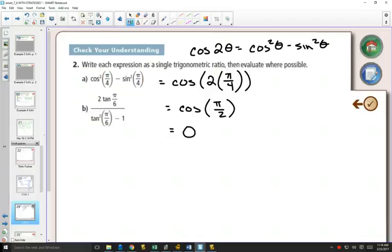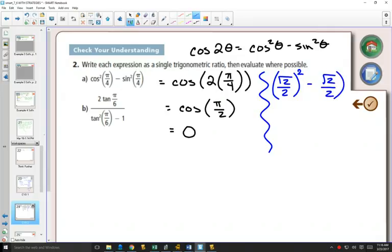That's not to say that this one could not have been done using just your unit circle from the beginning. What is cos of pi over 4 from your unit circle? Square root of 2 over 2. And so this would be square root of 2 over 2 squared minus sine is also square root of 2 over 2 squared. And you subtract them, and you get 0 as well. They both take about the same amount of writing space, and you both get the same answer right away.